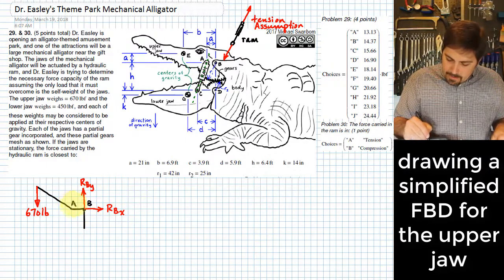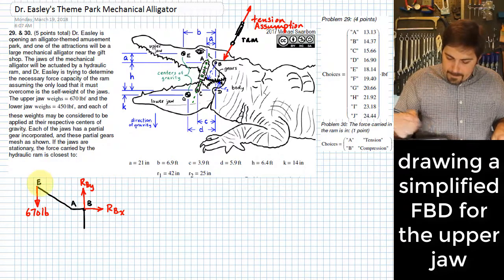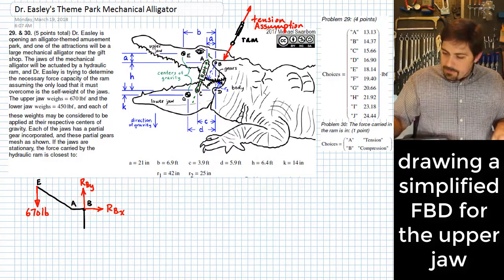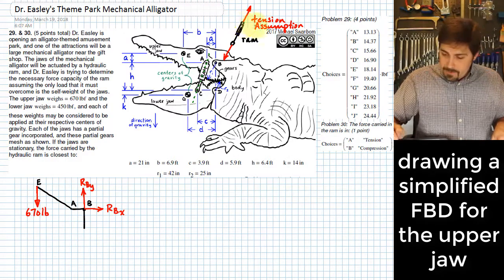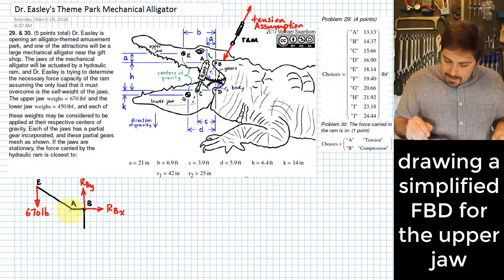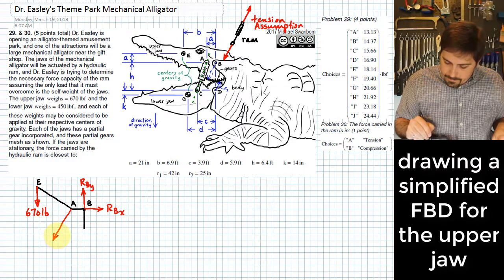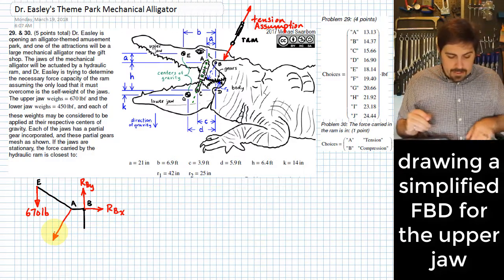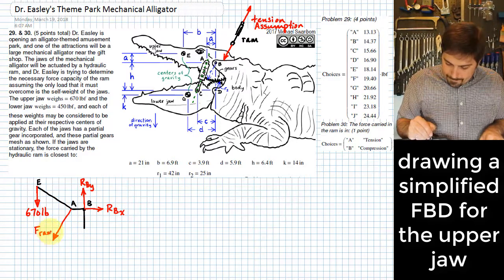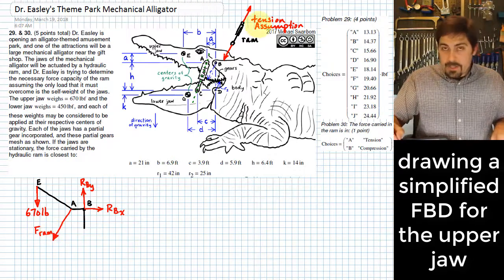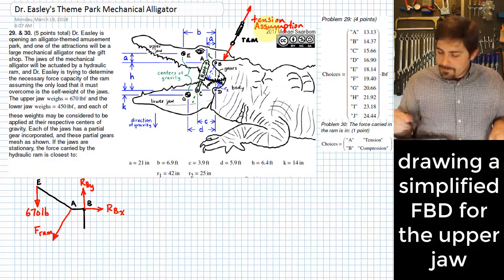This is point A. Up here, this is point E. Where this ram interfaces with this body is going to be equal and opposite to how I show it up here. So since I show it up and to the right, then right here, this is going to be down and to the left. I'll go ahead and give the name there just FRAM. I'm making an assumption that this is in tension by showing that in that way.